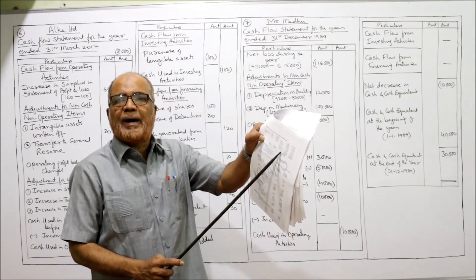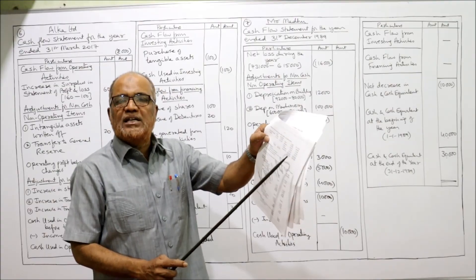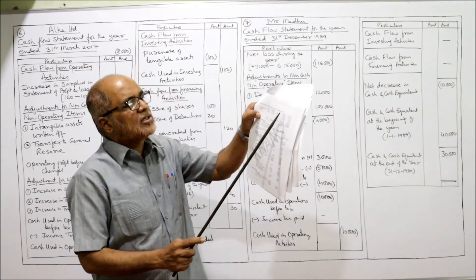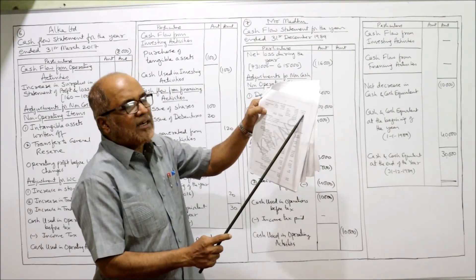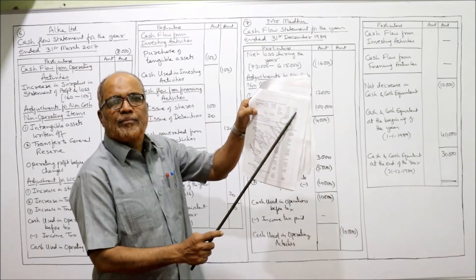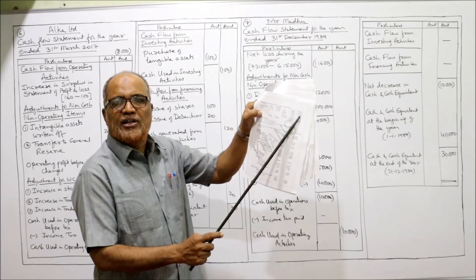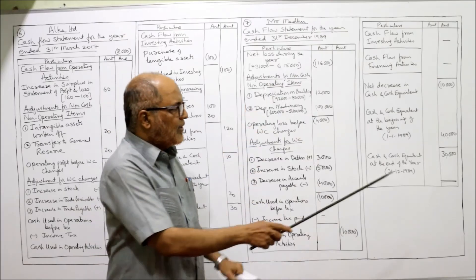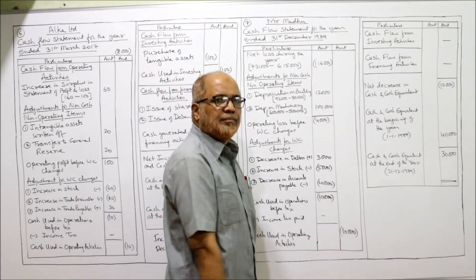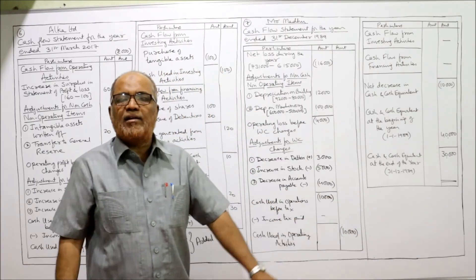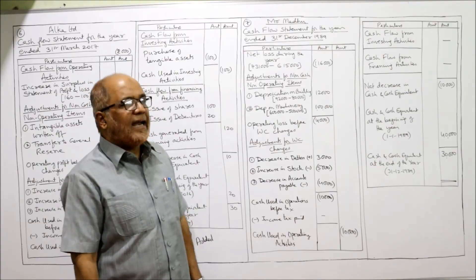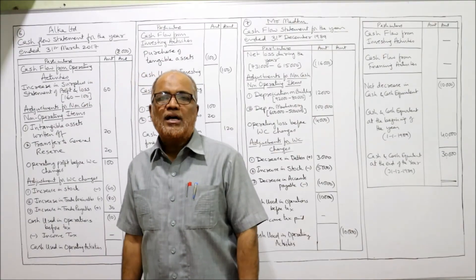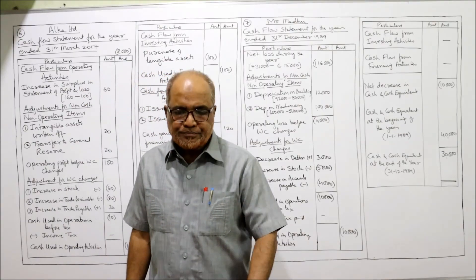So 40,000 minus 10,000 equals 30,000 — cash and cash equivalents at the end of the year, 31st December. Confirmed from the balance sheet: cash at end of year is 30,000. Our calculations are correct. This is the end of problem number seven.